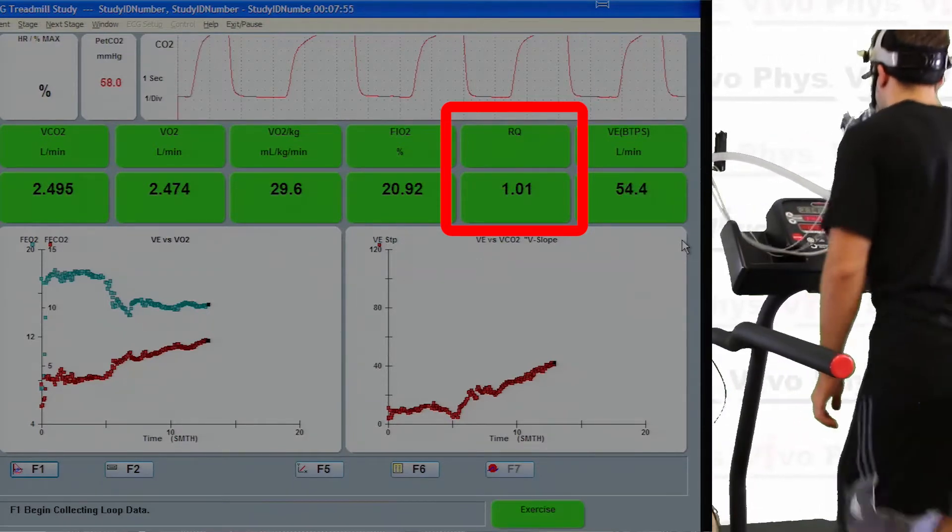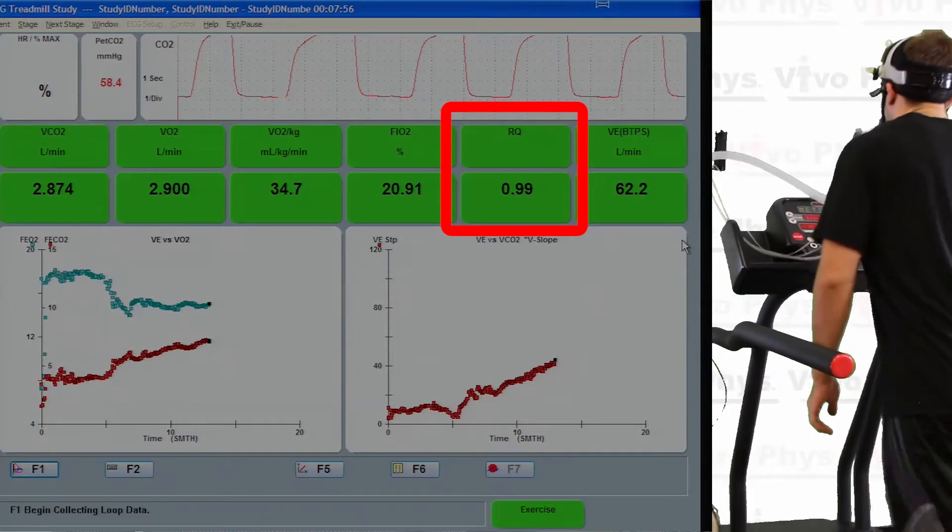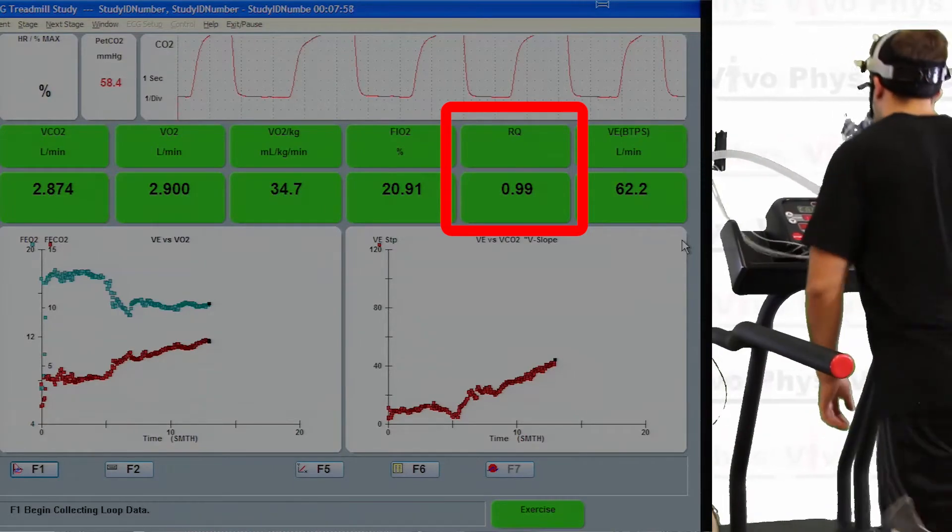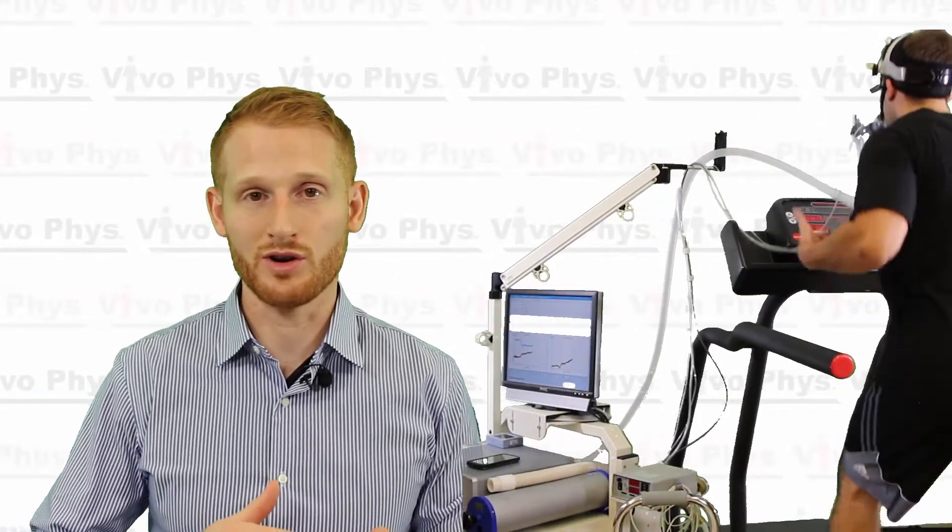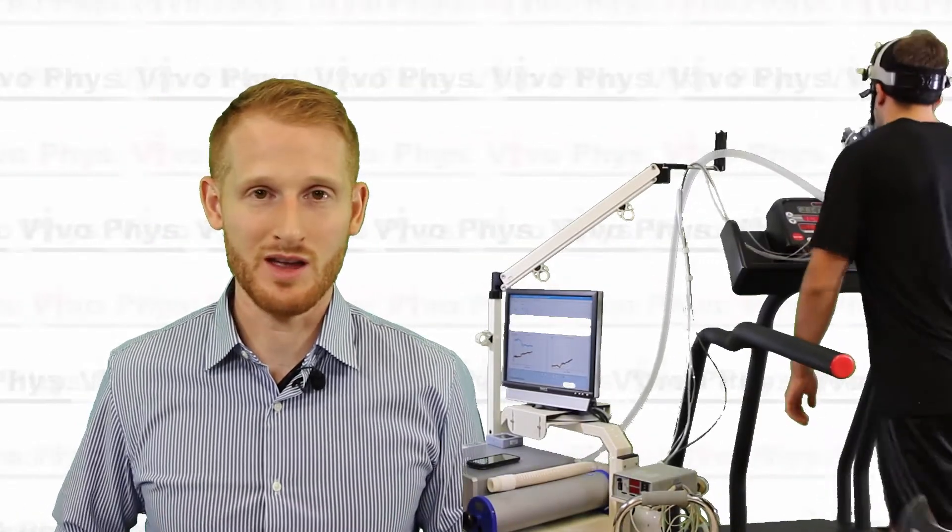Once it gets over one or near one, that's usually when the person starts feeling that they're getting very fatigued and it's a pretty strenuous exercise bout. That's what I usually look for while doing one of these tests. I look for that RQ or RER to get around one, and that's when I really start to encourage them and make sure I'm watching them closely.